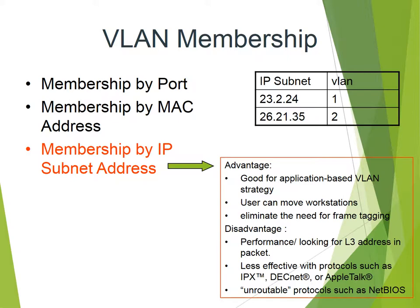Membership information is available in a table by port number, by MAC address, and by IP subnet address. VLAN one and two advantage: good for application use. Users can move or reposition, eliminating the need for frame tagging. Disadvantages: performance overhead from looking up L3 addresses in packets, less effective with protocols such as IPX, DECNET, or AppleTalk, and unroutable protocols such as NetBIOS.